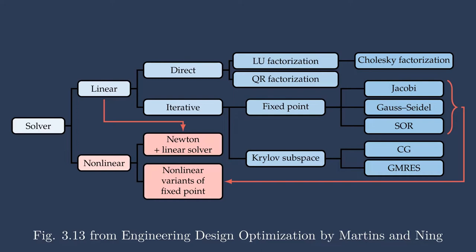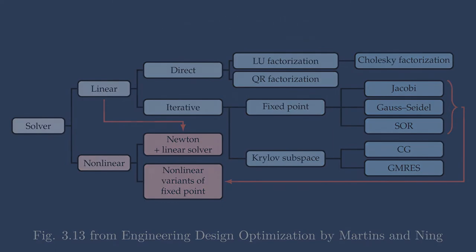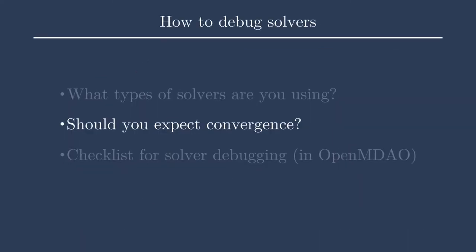There are many other specific settings and variations that are solver-dependent. However, maybe seven of the nine tips in this checklist are not dependent on the type of solver you have. My next point is: should you expect convergence? This might sound like a tongue-in-cheek question, but I actually mean it.